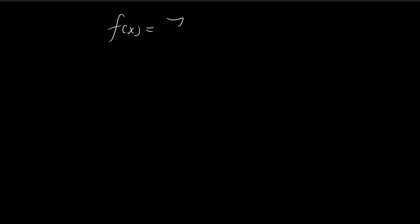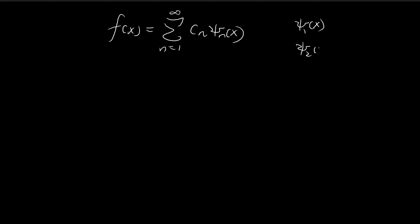So now I'm going to focus on a special property of the stationary states. Recall in the previous video, we essentially found the set of solutions to the time-independent Schrödinger equation — we found the solutions ξ1(x), ξ2(x), ξ3(x), and so on. Each one of these functions is a solution to the time-independent Schrödinger equation. Now they have a special property in that this set of functions is complete.